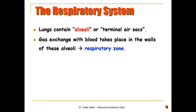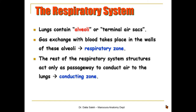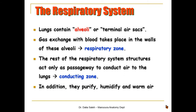The lungs contain alveoli, or terminal air sacs. The respiratory zone is where gas exchange takes place at the walls of these alveoli, while the conducting zone includes the rest of the respiratory system, where it acts only as a passage to conduct the air to the lungs. This is the functional classification of the respiratory system.